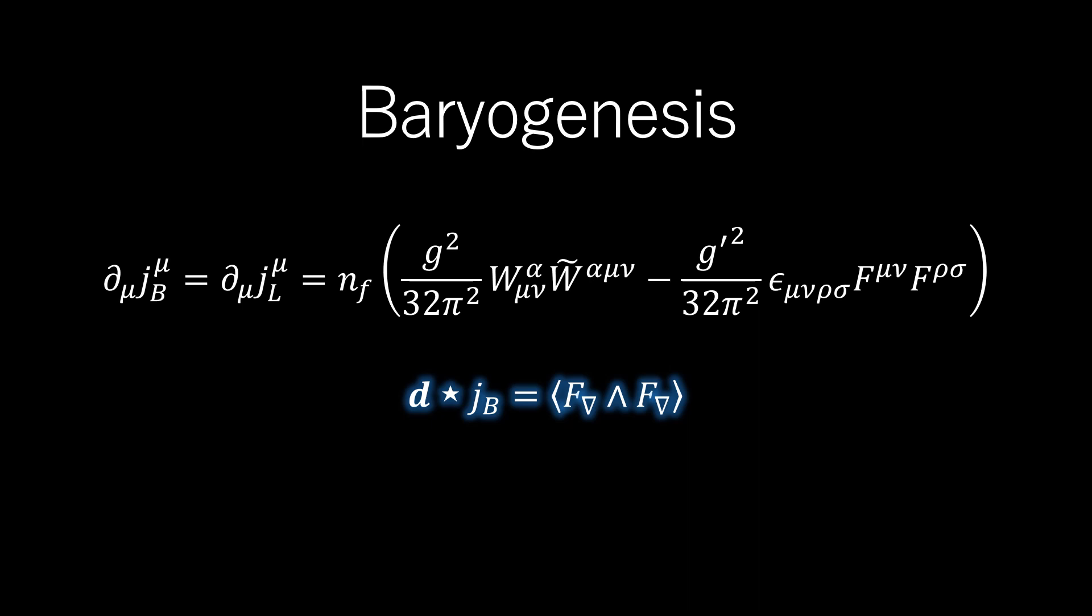this is the local expression for the 3-connection on the Churn-Simons line 3 bundle associated with the gauge field. The integral of F wedge F over closed manifolds is an integer and in conclusion, there is baryon generation proportional to this number.